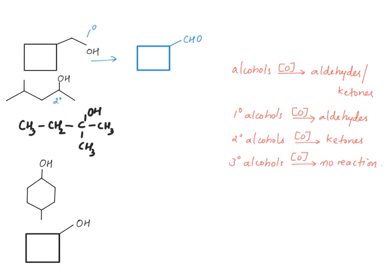Here this is a secondary alcohol, so when this is undergoing oxidation what we will get is the corresponding ketone. This is the line and angle structure of it — you will get a double bond to oxygen.